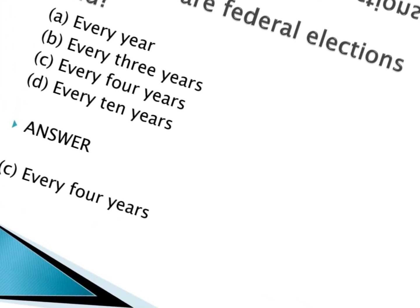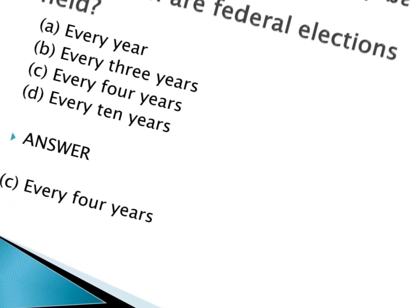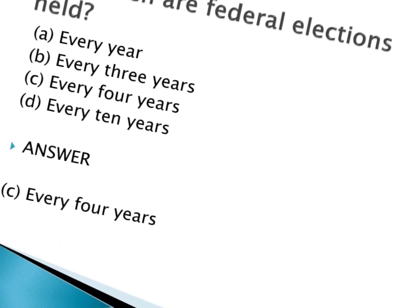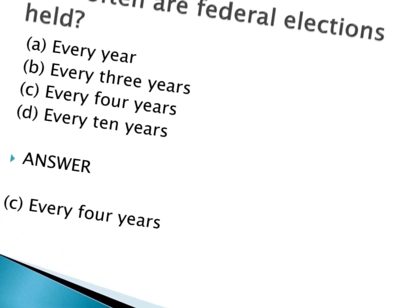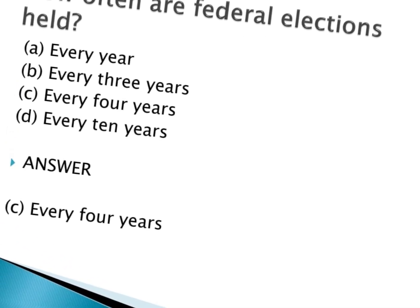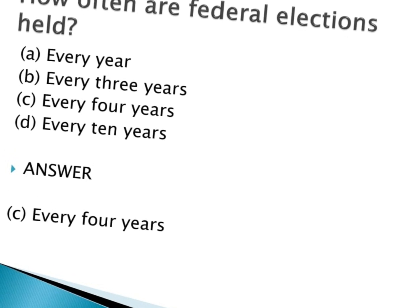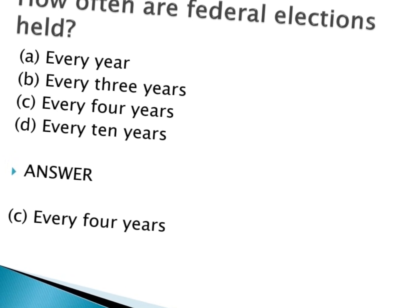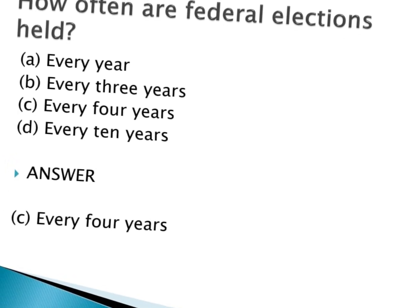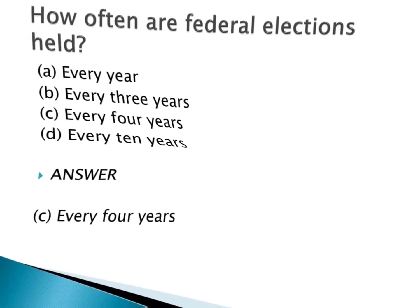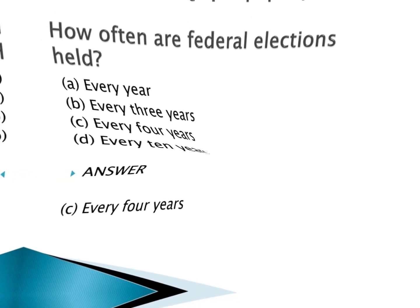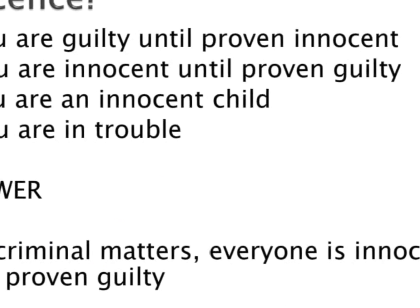How often are federal elections held? a. Every year. b. Every three years. c. Every four years. d. Every ten years. Answer: c. Every four years.